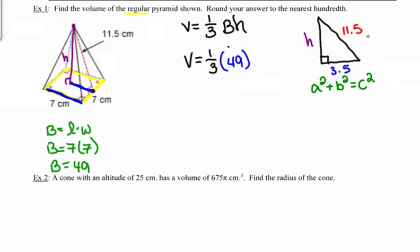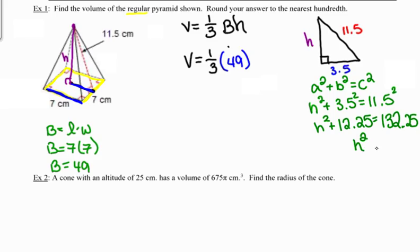Whenever you know slant height but want to find height, you can use Pythagorean theorem. If you know height but need the slant height, you can use Pythagorean theorem. So this becomes h squared plus 12.25 is equal to 132.25, or h squared is 120. Taking the square root of both sides gives me a height equal to the square root of 120.